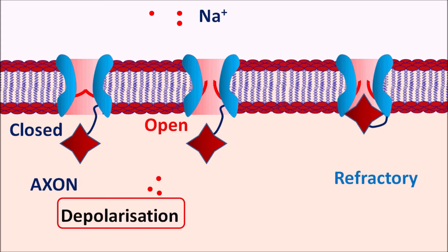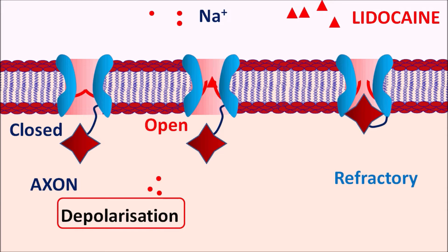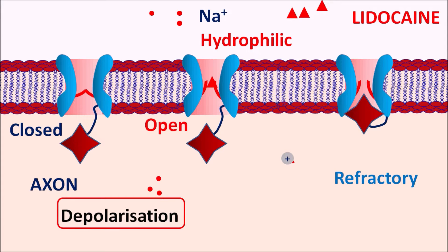Lidocaine can block this neuronal transmission. It can directly block the open-state ion channels — this pathway is called the hydrophilic pathway. Alternatively, lidocaine can cross the lipophilic membrane and enter into the cytoplasm. Within the cytoplasm this drug is protonated, making it hydrophilic in nature, and it can then block the inner side of the open-state sodium channels — this is called the hydrophobic pathway. By both the hydrophilic and hydrophobic pathways, lidocaine inhibits sodium channel activity, resulting in decreased neuronal conduction.